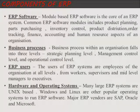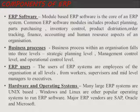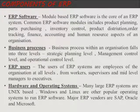Next, we have business processes. Business processes within an organization fall into three levels: the strategic planning level, management control level, and the operational control level. So your business organization has three levels.